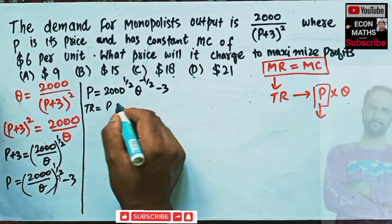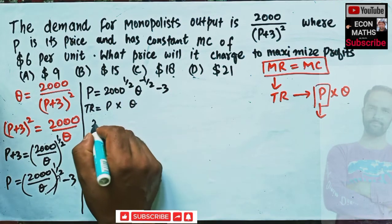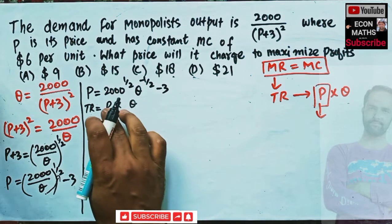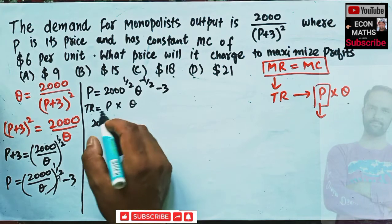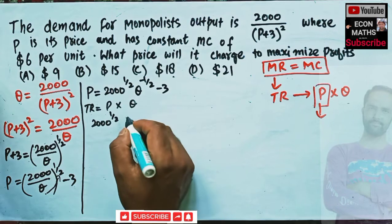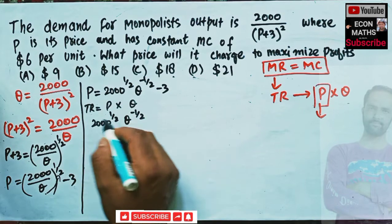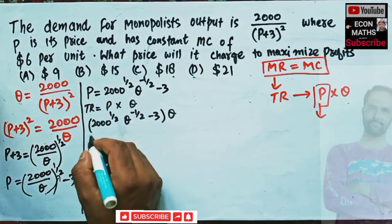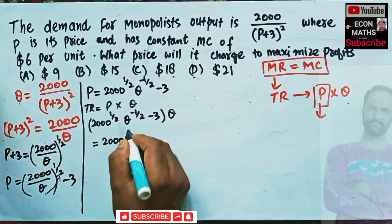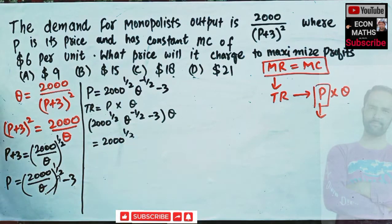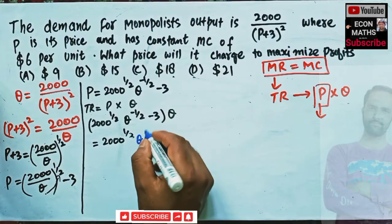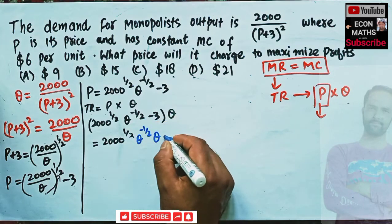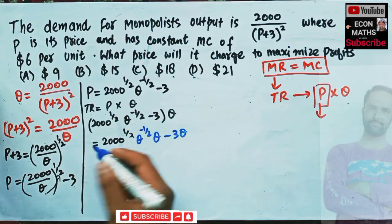Now we find total revenue, which equals price times output. Price is 2000^(1/2) · Q^(−1/2) − 3, and we multiply by Q. So total revenue = 2000^(1/2) · Q^(−1/2) · Q − 3Q = 2000^(1/2) · Q^(1/2) − 3Q. This is our total revenue function.